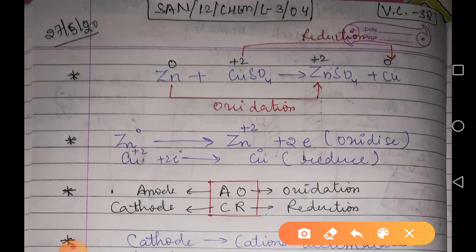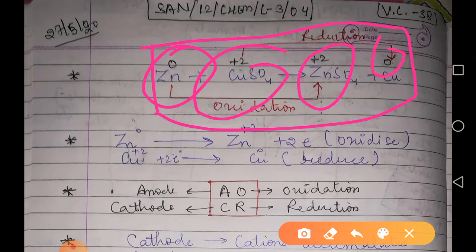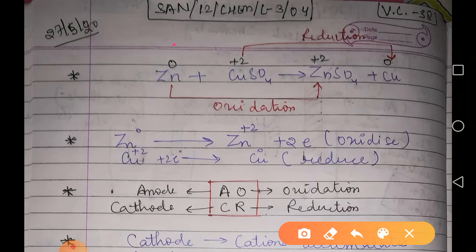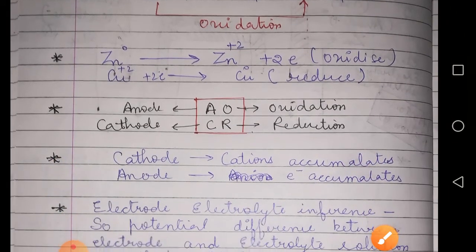Now we understand which reaction takes place. To confirm these are redox reactions, we find the oxidation states. For zinc, the oxidation state goes from 0 to +2 — it is releasing electrons, so oxidation takes place. For copper, the oxidation state goes from +2 to 0 — so reduction is taking place here.